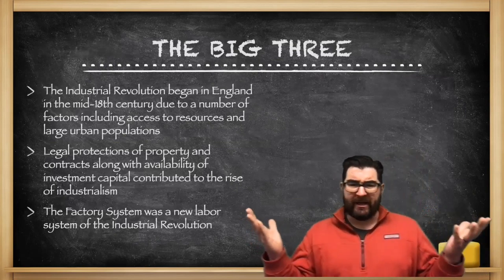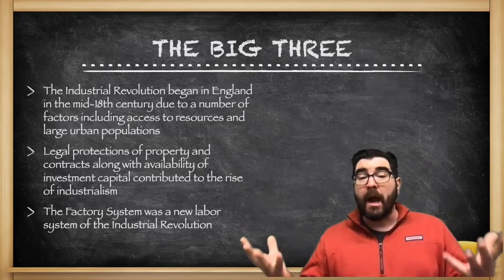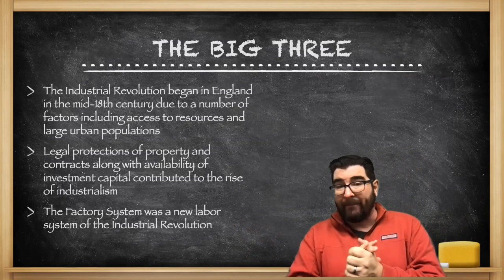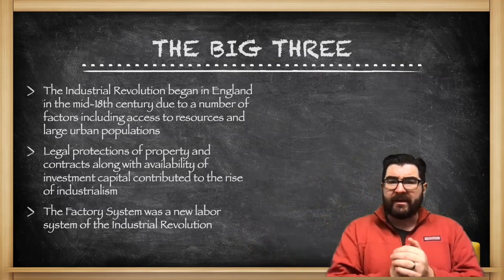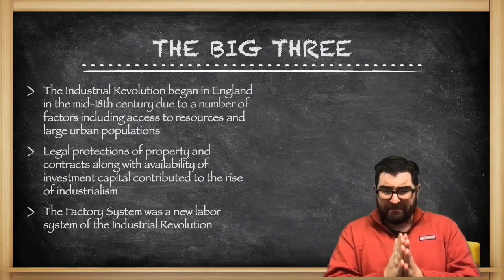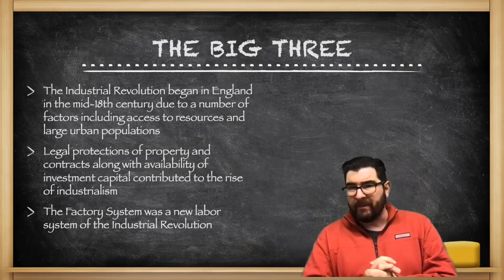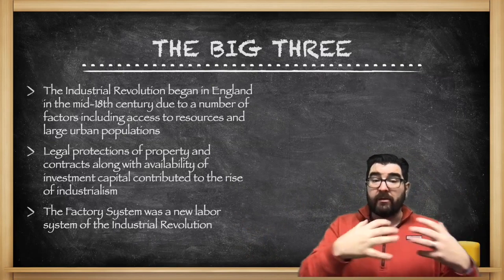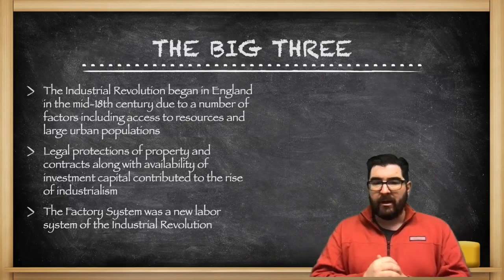The big three takeaways: First, the Industrial Revolution begins in England in the mid-18th century due to a number of factors, including access to resources and large urban populations. Second, legal protections of property and contracts, along with the availability of capital, contribute to the rise of industrialization. Third, the factory system is a new labor system developed in the Industrial Revolution era that uses low-skilled and low-paid labor to mass manufacture goods.